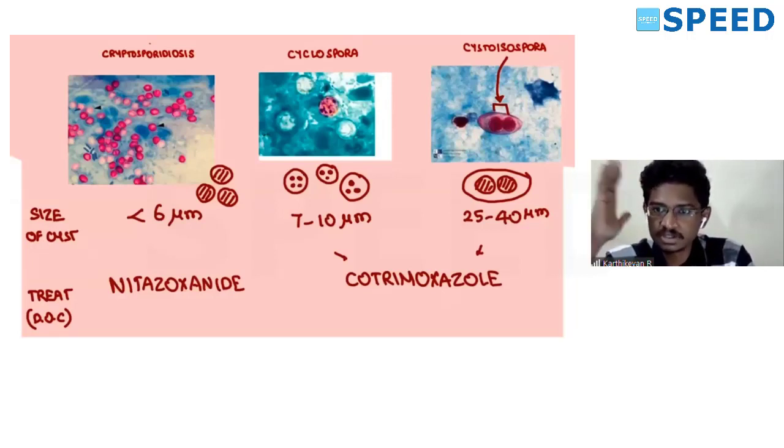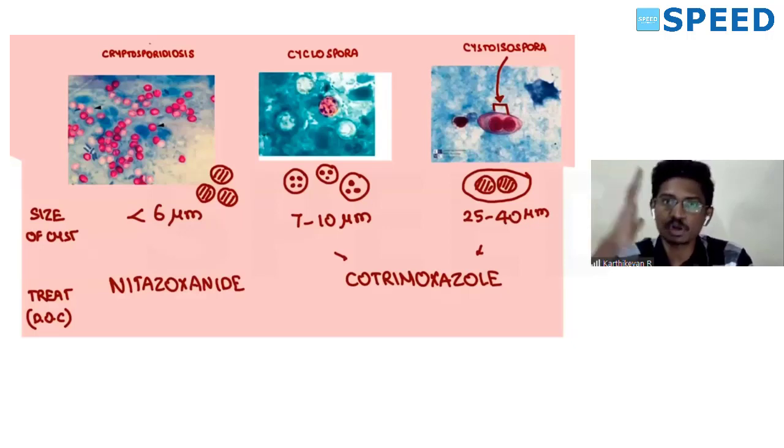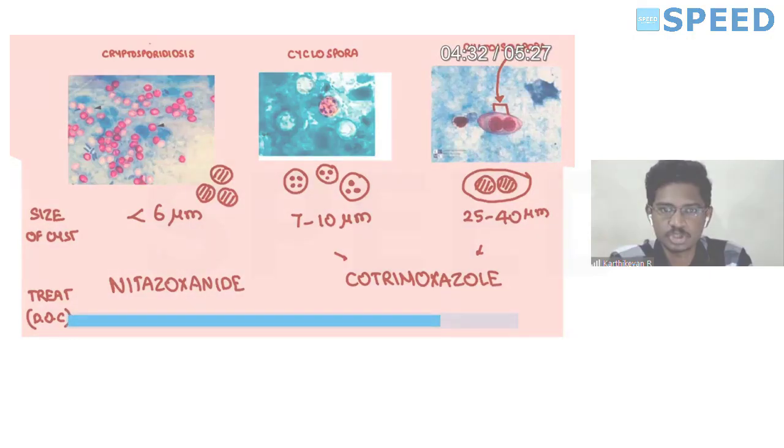So we have learned today the infective cause of diarrhea which you should remember in case of exam in HIV patients. Cryptosporidiosis: the smallest cyst, less than 6 micrometers, drug of choice nitazoxanide. Cyclospora: in between, autofluorescence, 7 to 10 micrometers, drug of choice cotrimoxazole. Then cystoisospora: similarity, largest of this is 25 to 40 micrometers, drug of choice is cotrimoxazole. That's all.